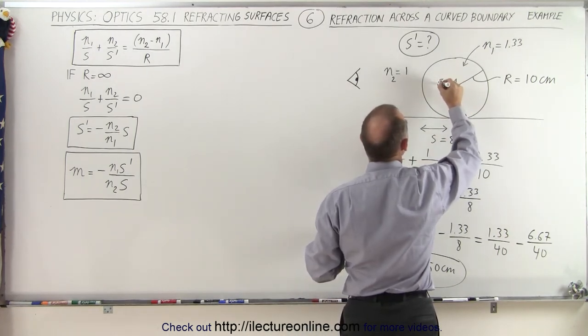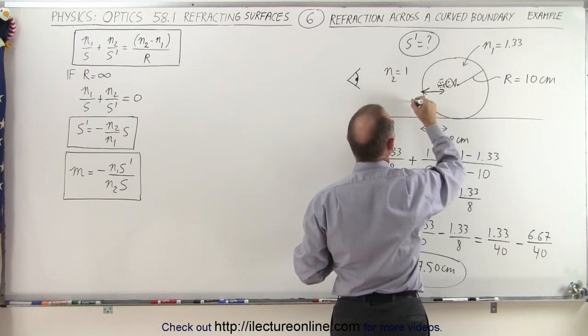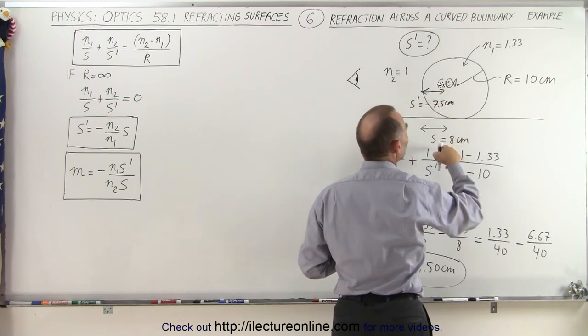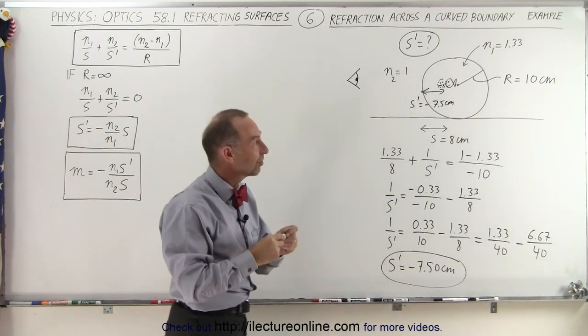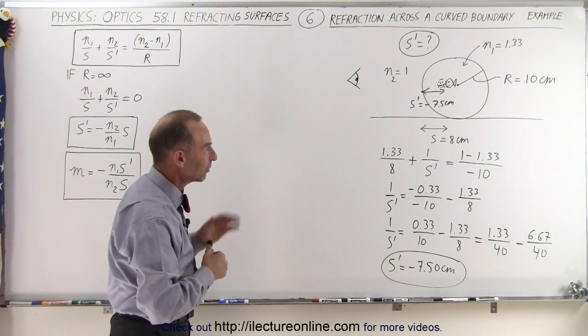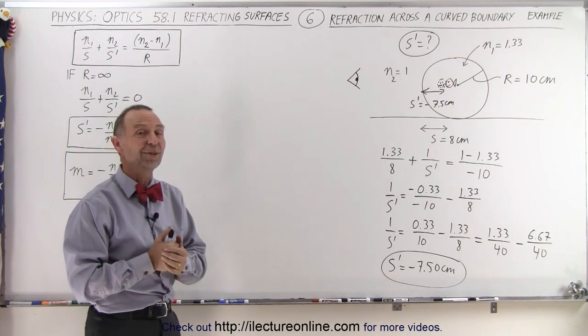There we go. There's the image of the little fish. And you can see that this distance from there to there, S prime, is equal to a minus 7.5 centimeters, when S was equal to 8 centimeters. So it puts the image just a little bit closer, about a half centimeter closer to the boundary. Negative means it's on the same side as the object, and that's how it's done.